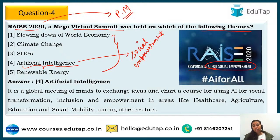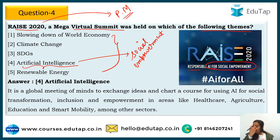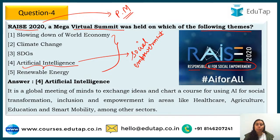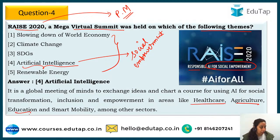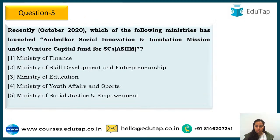The summit discussed how AI can be used in areas like health, agriculture, education, and mobility — the most important sectors nowadays. This was a very important virtual summit and the theme of Responsible AI for Social Empowerment is critical to remember.